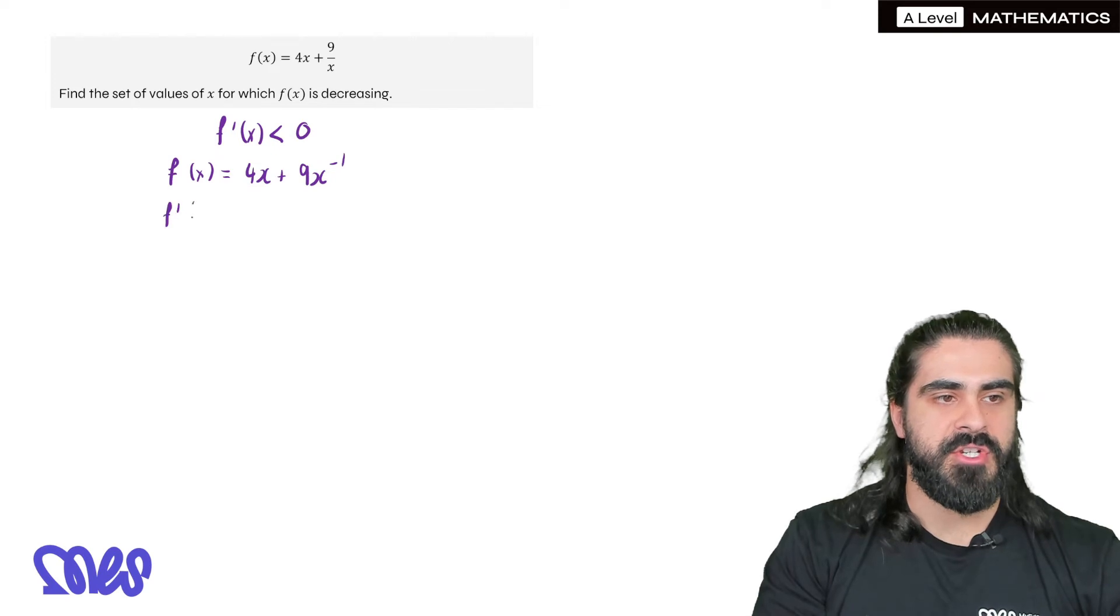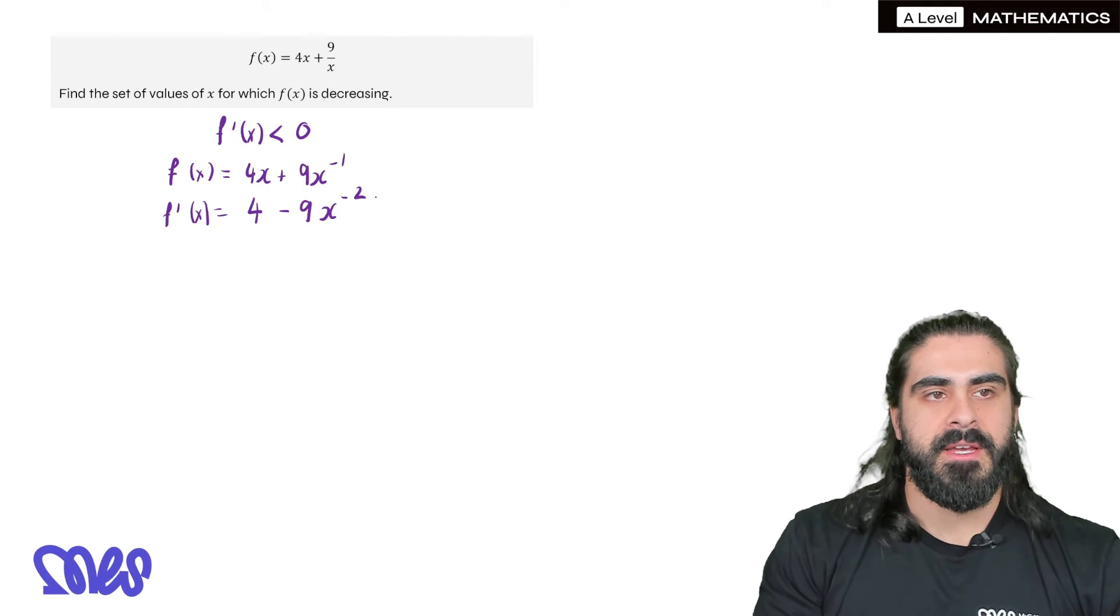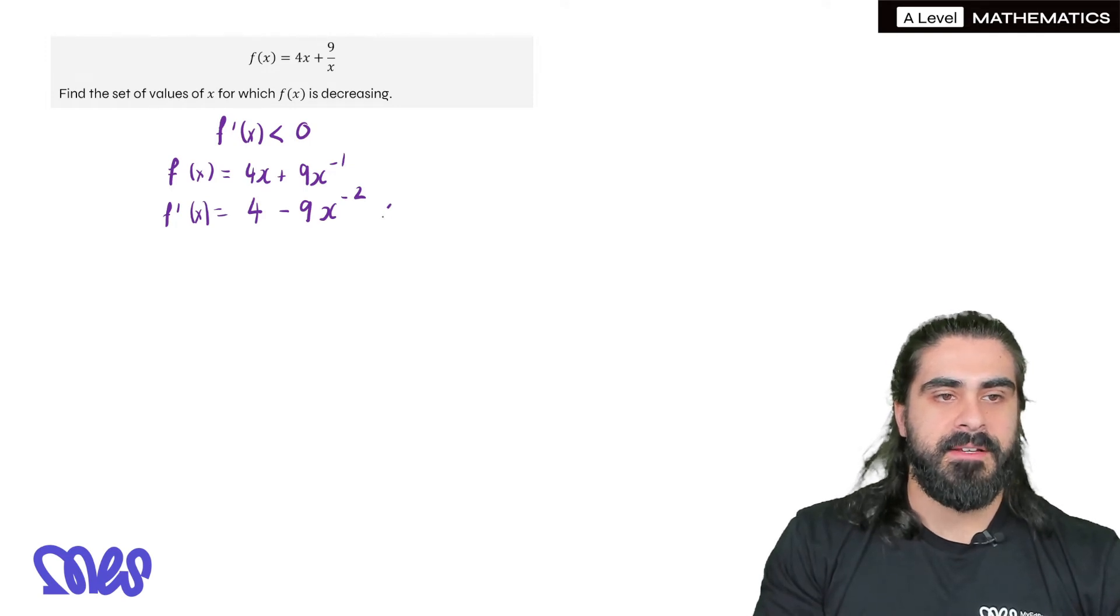Let's differentiate. So we have 4x differentiates to 4. Bring down the -1. 9 times -1 is -9. Knock 1 off the power. And then we want to make that less than 0.